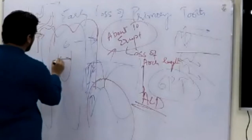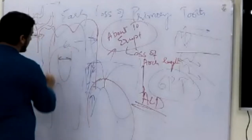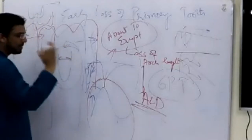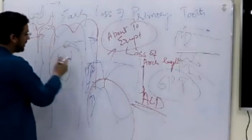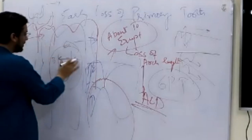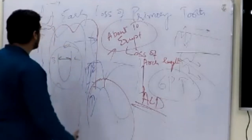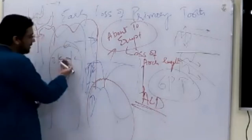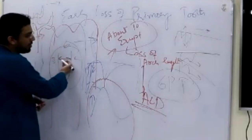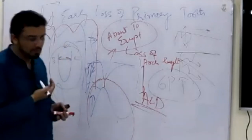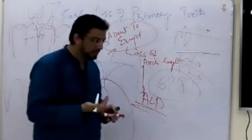The mesiodistal dimension and the buccolingual dimension of the lower molar is like this. So whenever the lower molar moves, it moves easily.